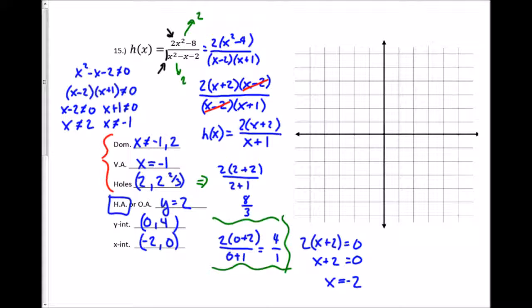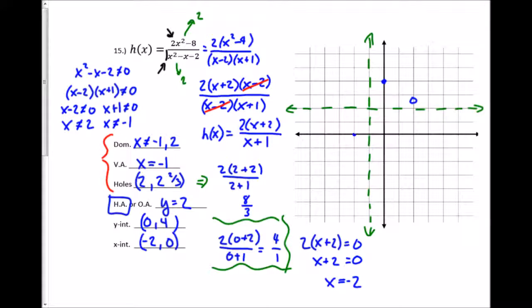Now I plot: vertical asymptote at x= negative 1, horizontal asymptote at y=2, hole at (2, 2⅔) marked with an open dot, y-intercept at (0, 4), and x-intercept at (negative 2, 0). The curves hug the asymptotes and pass through the plotted points, completing the graph of this rational function.